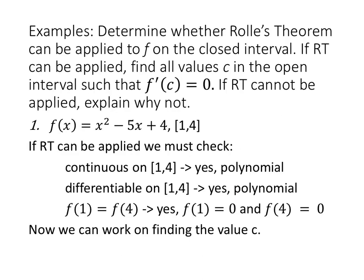Now let's deal with Rolle's Theorem directly. We'll determine whether Rolle's Theorem can be applied to F on the closed interval. If it can be applied, we find all values C in the open interval such that F prime of C equals zero. If it cannot be applied, we explain why not. Our function F of X equals X squared minus five X plus four on the closed interval from one to four. Is the function continuous on the closed interval? Yes, because it's a polynomial. Is the function differentiable on the open interval? Yes, still polynomial. Is F of one equal to F of four? Yes, because they happen to be the x-intercepts of this function.